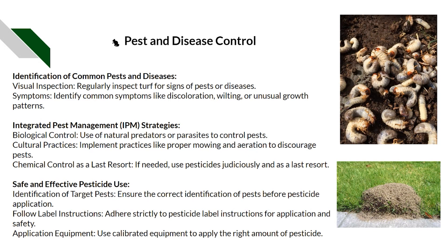For pest and disease control, we start with visual inspections — identifying common symptoms like discoloration, wilting, and unusual growth patterns, which usually indicate disease, damage, disorder, or pests. We can use IPM (Integrated Pest Management) programs, which prioritize biological and cultural controls, with chemical controls — typically pesticides — as a last resort. If using pesticides, we must identify the exact type of weed, damage, disease, or pest to ensure we're applying the correct product, strictly following the label instructions.